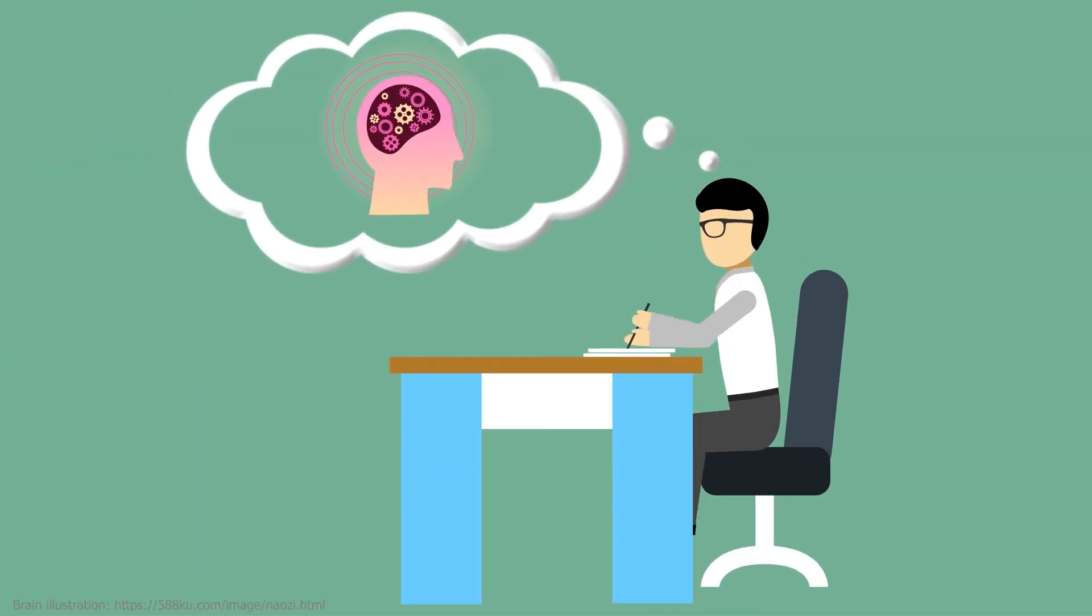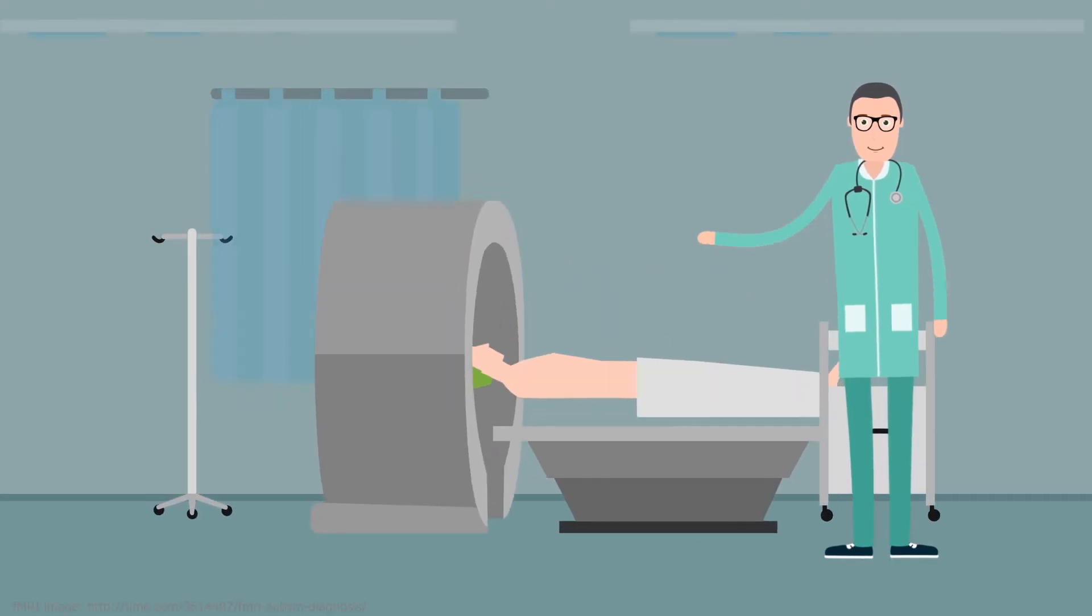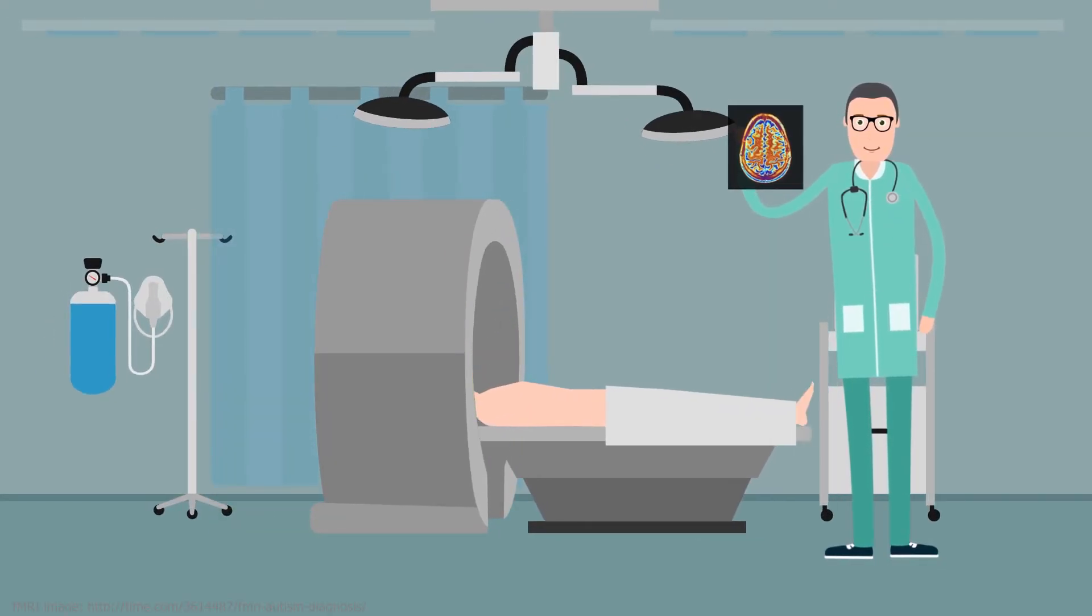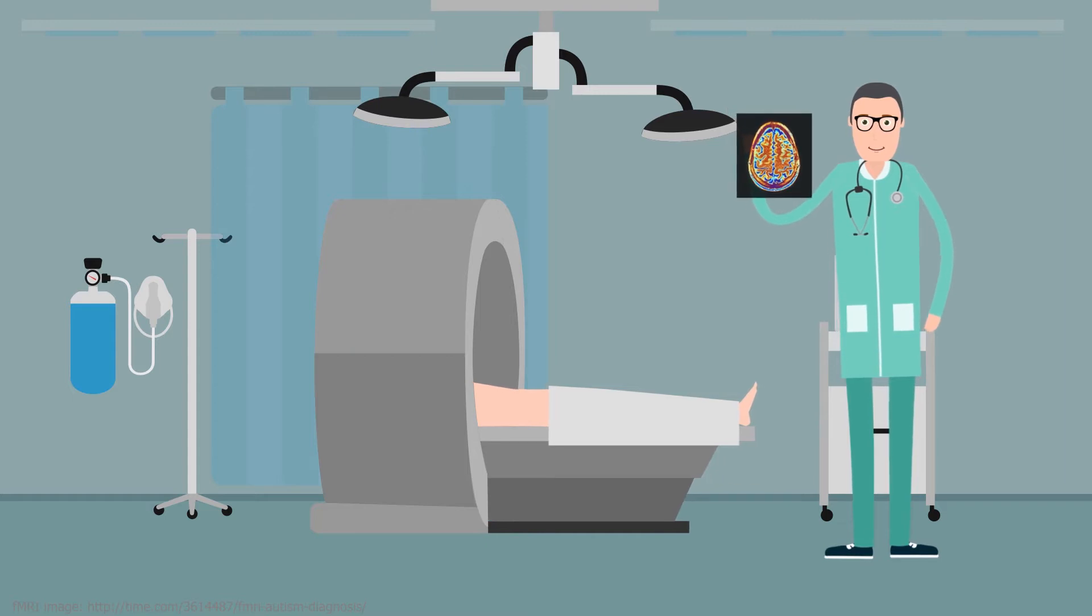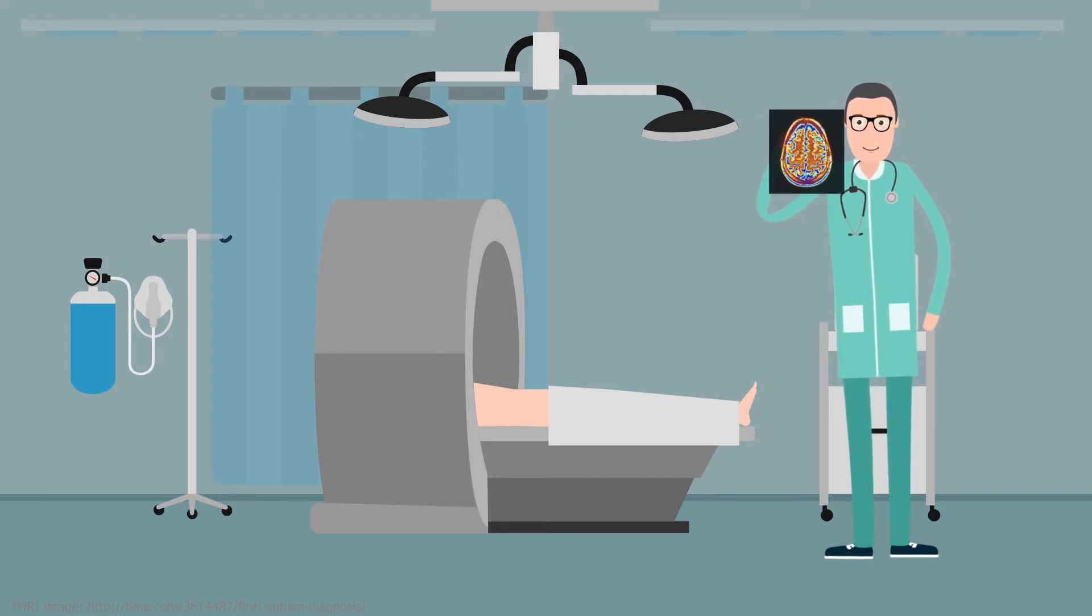How do distinct brain regions interact with one another when performing a specific task? To answer these questions, neuroscientists have relied on fMRI neuroimaging, which monitors functional activation of brain regions by measuring changes in blood oxygen levels.